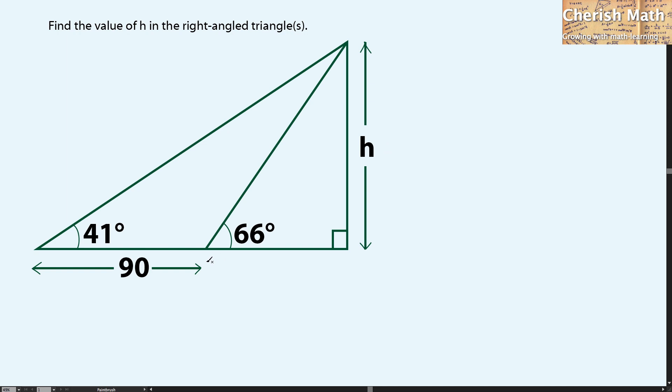I'm going to find out what is the length here by using trigonometric. Then, tan 66 degrees equals the value of H divided by the length here that I'm going to label with L. L is now equal to H divided by tan 66 degrees.